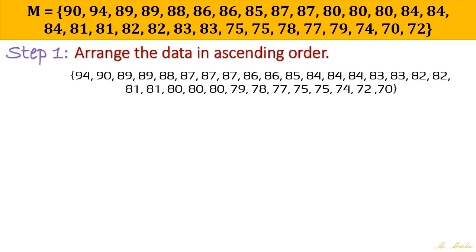So here, what do we mean by ascending order? You are going to arrange it from lowest score or lowest number up to the highest number. Okay, so here as you can see, we started with 70, 72, 74 up until 94.